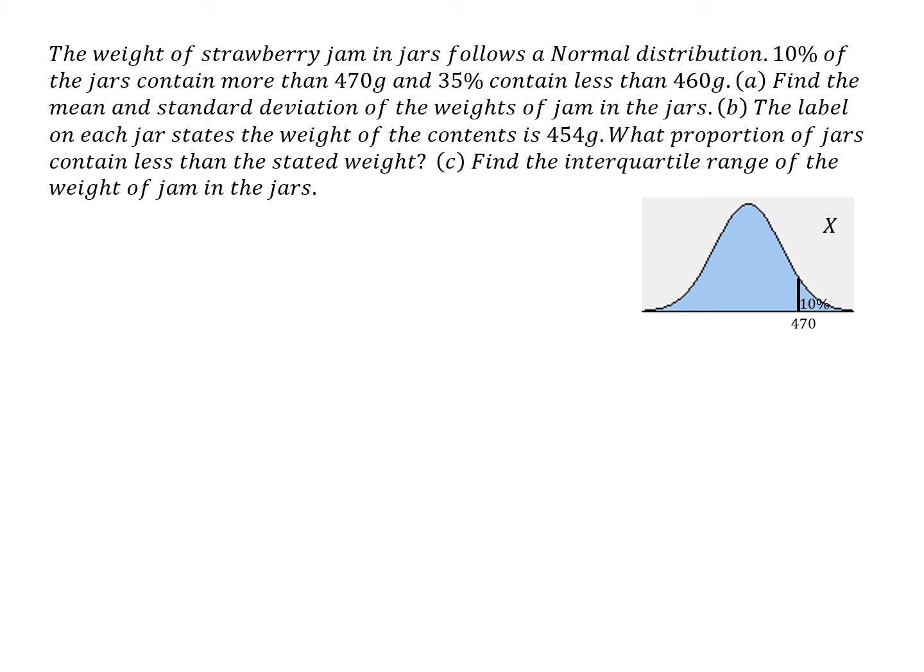So there's our probability distribution for the weight of strawberry jam in jars. And 10% of the jars contain more than 470 grams. 35% contain less than 460. So that's where we are there. Now we don't know what the mean and the standard deviation are. So in order to do that...